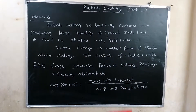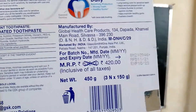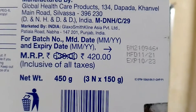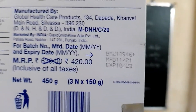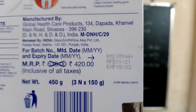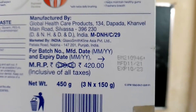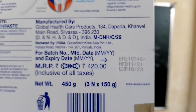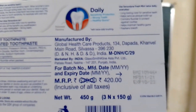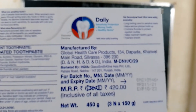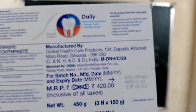Here is a real product example. On a product, the batch number is given along with the manufacturing date and expiry date. For example, batch number BM2-10946, manufacturing date November 2021, expiry date 2023. Each particular batch has a batch number. If there is any problem with a product, we can complain and they will verify which batch it was manufactured in.